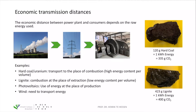Why do we need a grid? Why not install power plants right next to the consumers? In the early years of electric energy, power plants were installed right in cities, close to factories and industry. Over the decades, power plants moved outside cities and a distribution grid was established to transmit electric power from large power plants to consumers. The distance between power plants and consumers depends on the type of energy resource used.